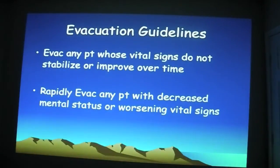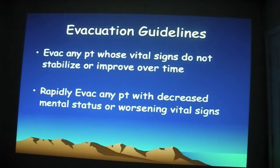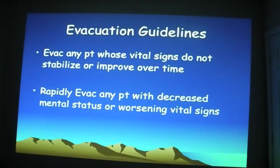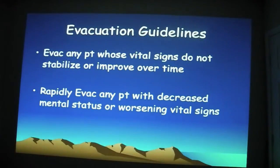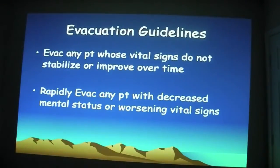For evacuation guidelines, evacuate any patient whose vital signs do not stabilize or improve over time. When you get hurt, your heart rate and everything is going to go up, but within minutes it should decrease and come back down to a normal state. If it doesn't, then we have something wrong. Rapidly evacuate any patient with decreased mental status or worsening vital signs. For example, if their pulse is 120, then a few minutes later it's 80, then 60 — their pulse is getting worse and worse. That's a rapid evacuation.